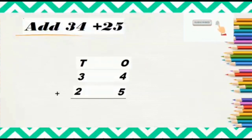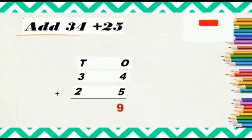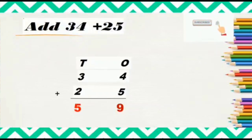Tell me students, what is 4 plus 5? 4 plus 5 is 9. Next, let's move to the 10s column. What is 3 plus 2? 3 plus 2 is 5. So the total of 34 and 25 is 59.